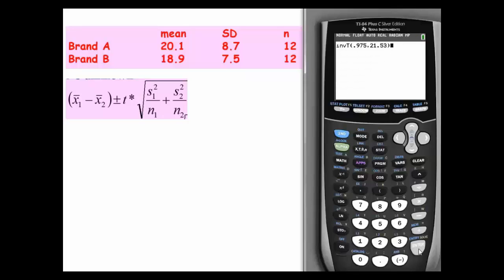So that's what it should look like for those that don't have the fancy calculator. Just inverse T, .975, 21.53 and then we hit enter and it's going to give us 2.076 or 2.08, which is what matched the T star from the slide, which we'll get back to in a second.